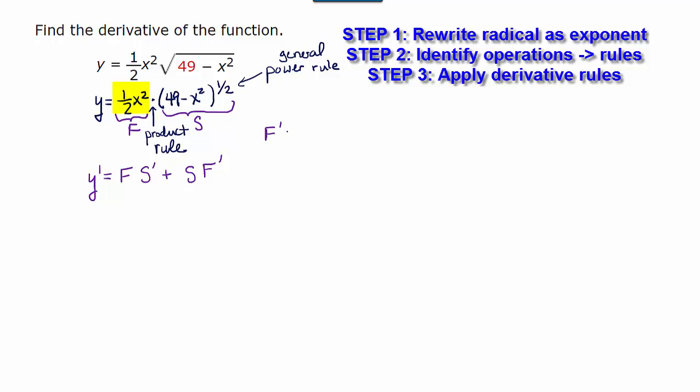Let's start with the derivative of the first function. The derivative with respect to x of 1 half x squared. Well the 1 half remains the same. The derivative of x squared is 2x to the first. 1 half times 2 is going to give us 1x to the first or just x.